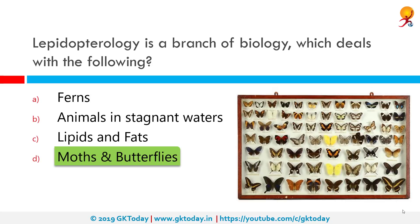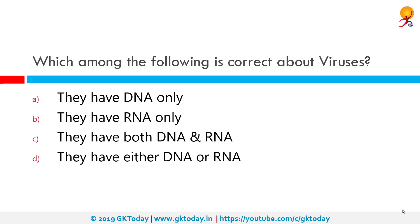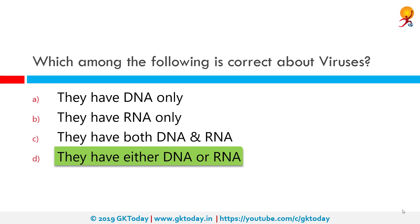Which among the following is correct about viruses? The correct answer is they either have DNA or RNA. Most viruses have either RNA or DNA as their genetic material. The nucleic acid may be single or double stranded.